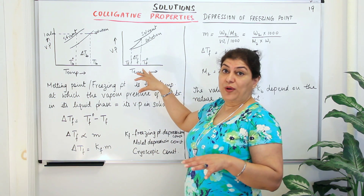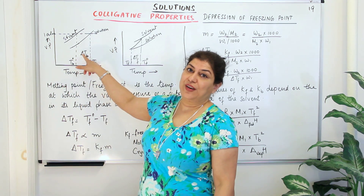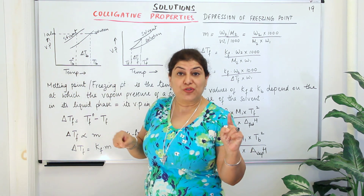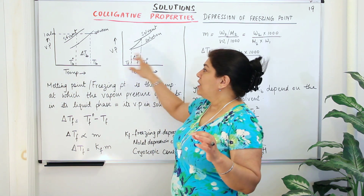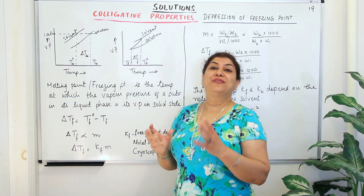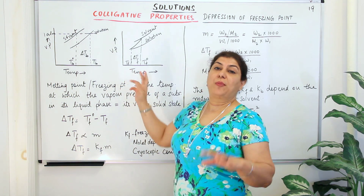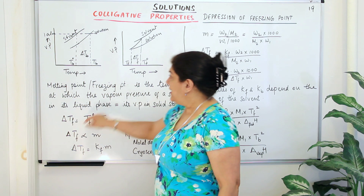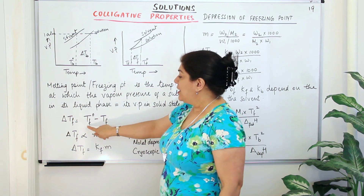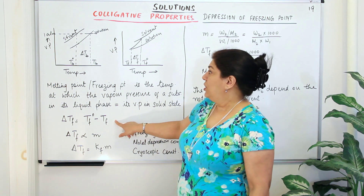Depression in freezing point is a colligative property. Just as delta Tb is proportional to the molality of the solution, delta Tf is also proportional to molality. Delta Tf is the difference in the freezing points — specifically T0f minus Tf, the freezing point of the solvent minus the freezing point of the solution, because the freezing point of the solution is smaller.